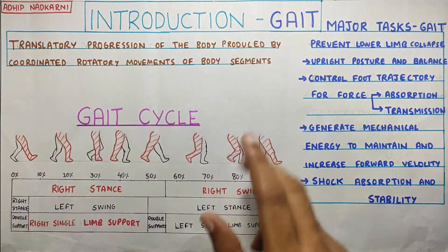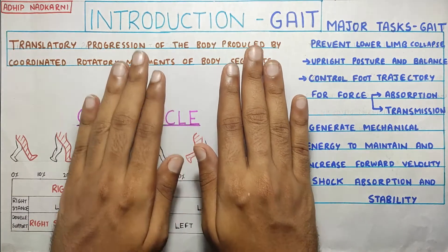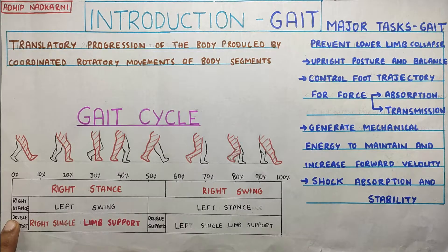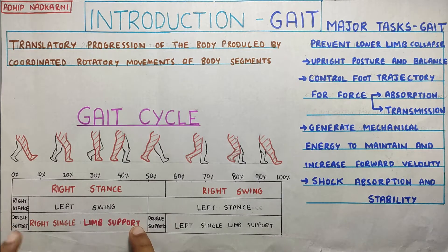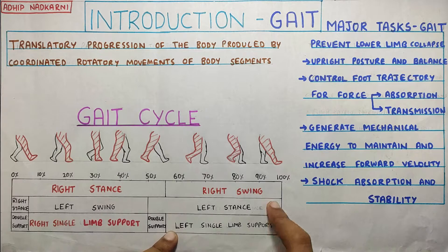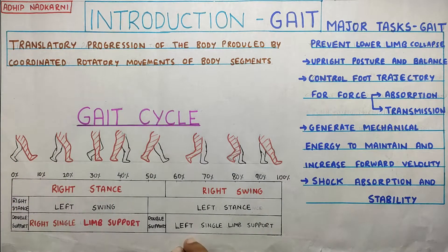Between those phases, there are periods where both feet are in contact with the ground, which is called double support. There is double support at two points in the cycle, and the rest will be right single leg support during the right stance, and left single leg support during the left stance. Those are the basics of the gait cycle.